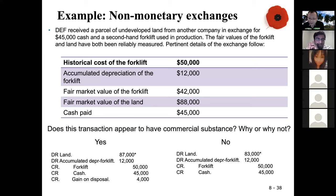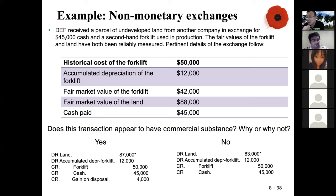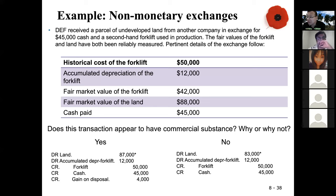The fair market value of the land is not trick information. Remember: if you can measure land more reliably than the equipment, we go with the land fair value. In this case, both were measured with equal reliability, so the standard suggests using the asset given up. But if the land fair value has more reliability than the forklift, we use the fair value of land — $88,000 — meaning debit land for $88,000 and there would be a gain of $5,000. It really depends on the scenario.